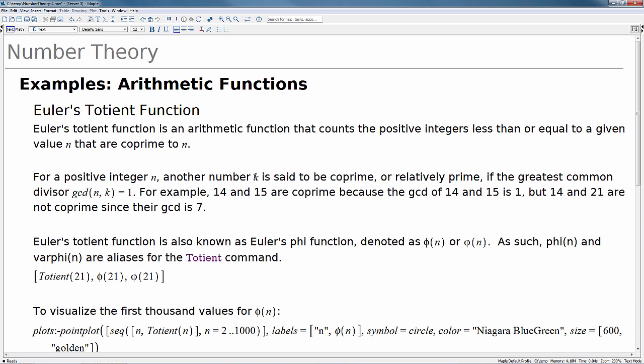The next set of examples I want to discuss are several examples of arithmetic functions. Euler's totient function is an arithmetic function that counts the number of positive integers less than or equal to a given value n that are co-prime to n. For a positive integer n, another number k is said to be co-prime or relatively prime if the GCD, the greatest common divisor of n and k, is equal to 1. So for example 14 and 15 are co-prime because the GCD of 14 and 15 is 1. But 14 and 21 are not co-prime since their GCD is 7. So we saw this in the previous section when we were discussing the r co-prime command.